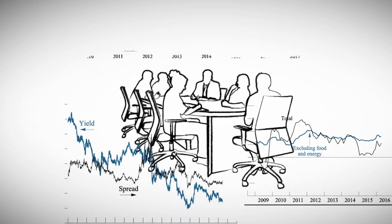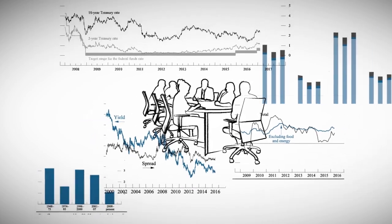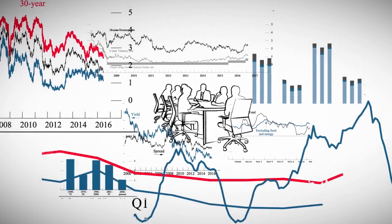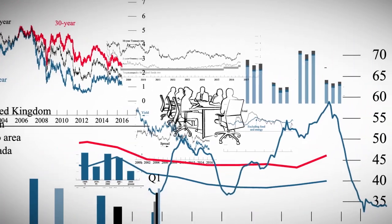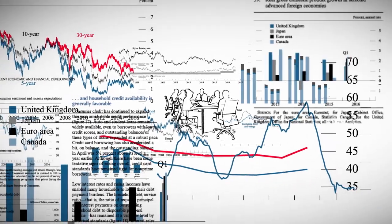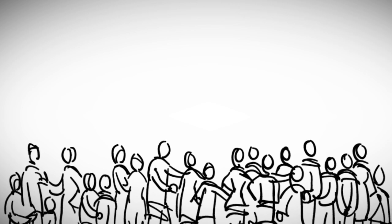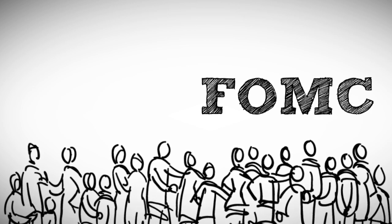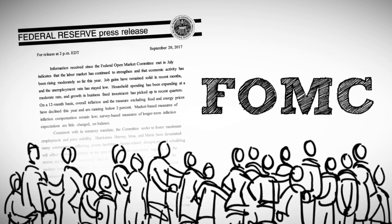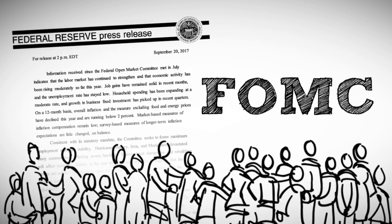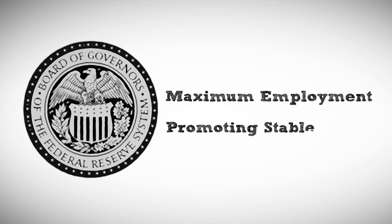FOMC policymakers rely on a broad range of information in their assessments and deliberations. They analyze the most up-to-date economic data and review reports and surveys from businesses and financial market contacts. To communicate its policy actions to the public, the FOMC releases written statements after every meeting and conducts periodic press conferences. Twice a year, the Board Chair goes to Capitol Hill to testify before Congressional Committees on economic development, as well as the Fed's actions to promote maximum employment and stable prices.